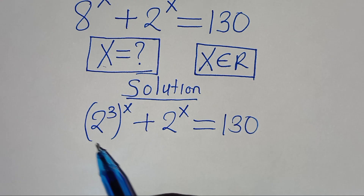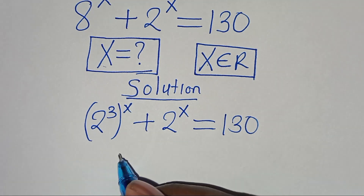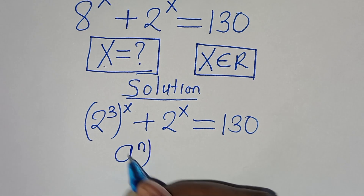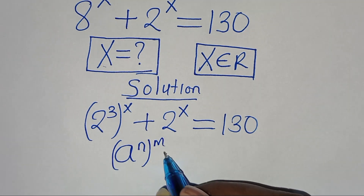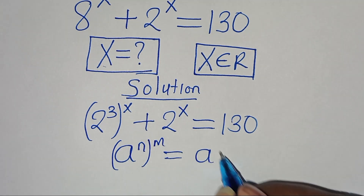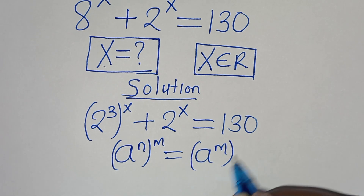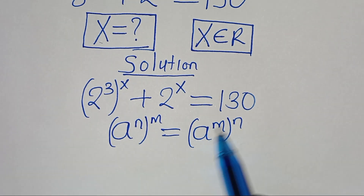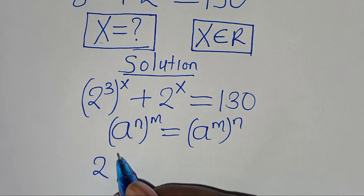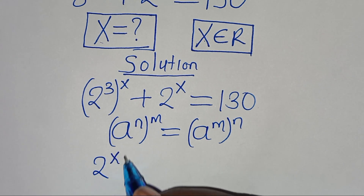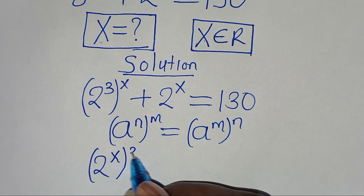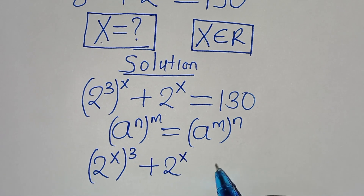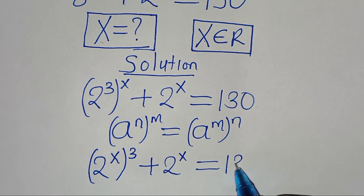The next step is that 2 to the power of 3 to the power of x is in the form of a to the power of n raised to the power of m, and this can be expressed as a to the power of m raised to the power of n. Applying this exponential property, we have 2 to the power of x raised to the power of 3, plus 2 to the power of x, equal to 130.